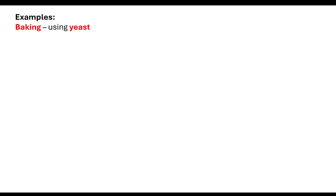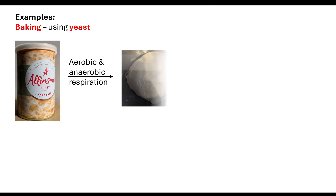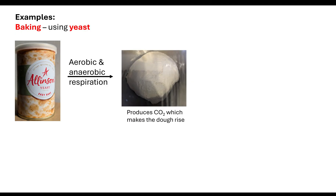Let's look at baking as an example. When baking you use yeast — a fungus, a eukaryotic organism — which can do aerobic and anaerobic respiration. We provide yeast with flour and water, and it breaks down the polysaccharides inside the flour into monosaccharides — glucose — which can then be used for aerobic or anaerobic respiration if oxygen has been removed. Whether it's aerobic or anaerobic, yeast produces carbon dioxide, and that CO2 is what makes the dough rise.